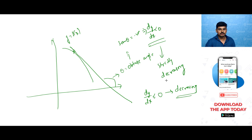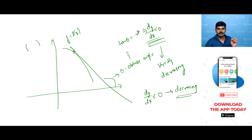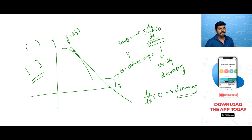Make sure you don't make mistakes here. If the question is asking about strictly increasing or strictly decreasing, use open brackets. If it is only increasing or decreasing, it would be a closed bracket. If it is strictly decreasing or strictly increasing, open bracket; if it is only increasing or decreasing, closed bracket.